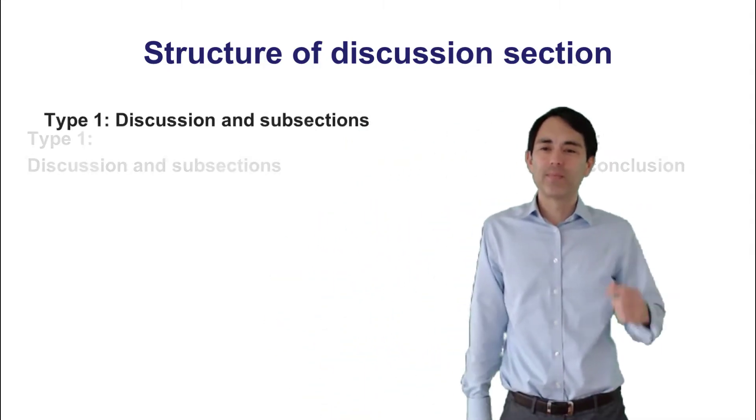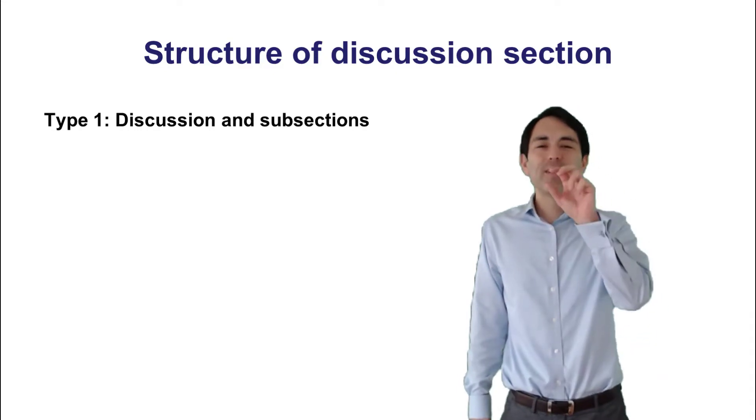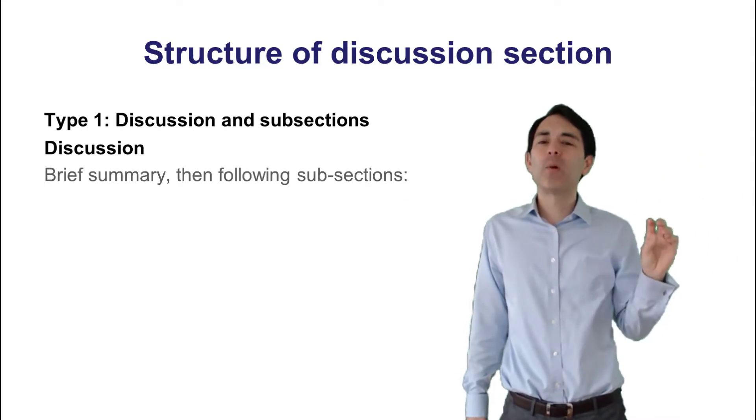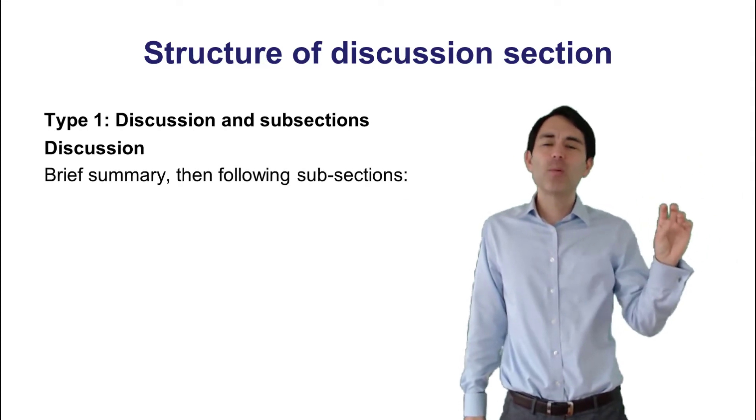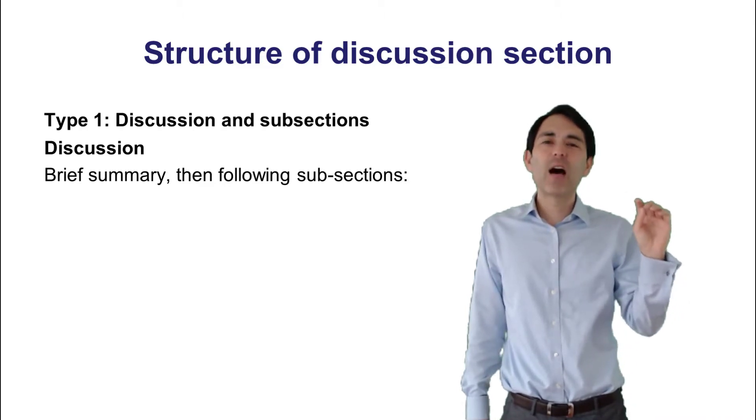Starting with type 1. In type 1, where you have a discussion with dedicated subsections, you would first label this section with discussion. This will be followed by a brief summary. Let's say half a page, maybe one page, where you summarize your key findings.